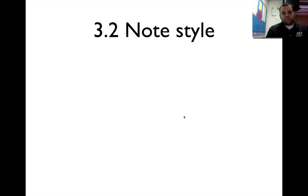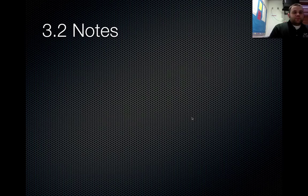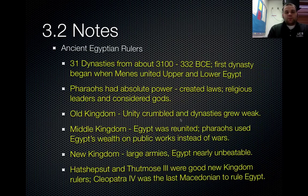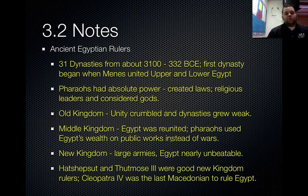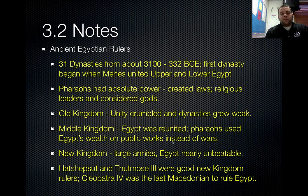So let's begin. Some things about the ancient Egyptian rulers: there were 31 dynasties, or 31 different families, from about 3100 BCE to about 332 BCE. The first dynasty started with Emperor Menes, and this is when he united upper and lower Egypt, because up until this time they were two separate entities.